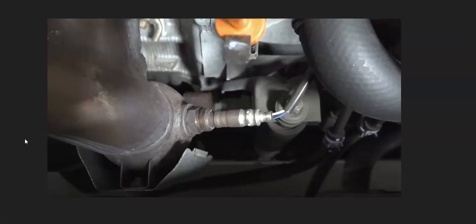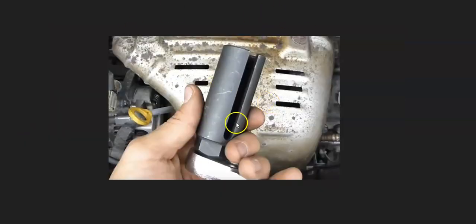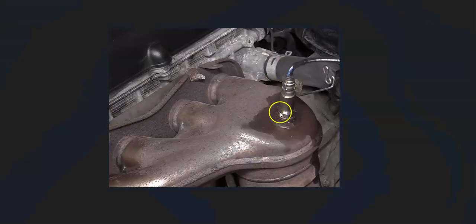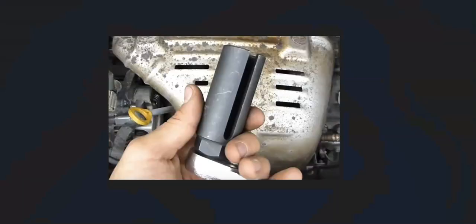One thing to keep in mind with these sensors is that sometimes you need a special tool to get them out and back in. Not all the time—sometimes they're more out in the open where you can get on them with an open-end wrench. But sometimes they can be recessed into the exhaust and you need this special tool.